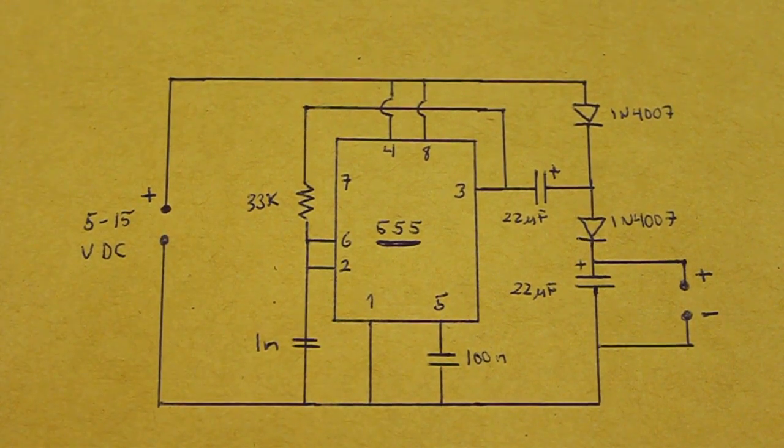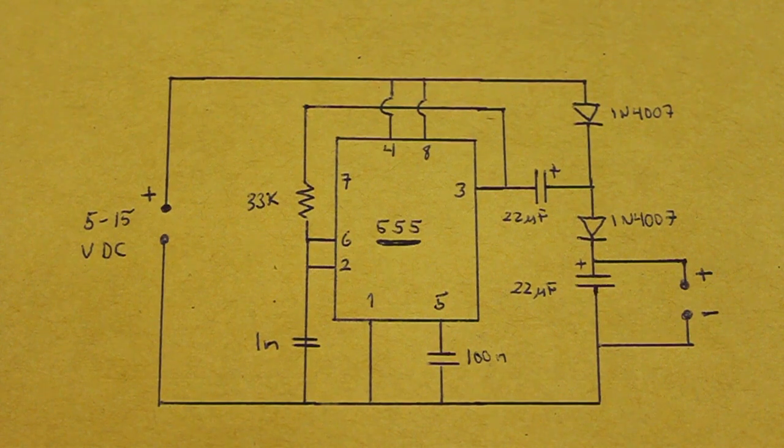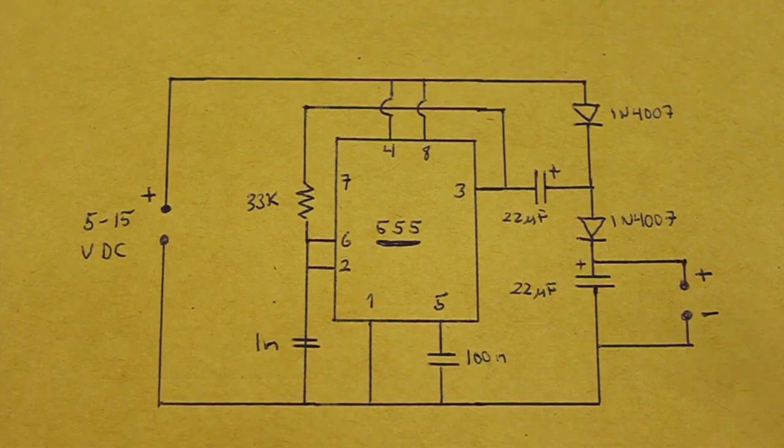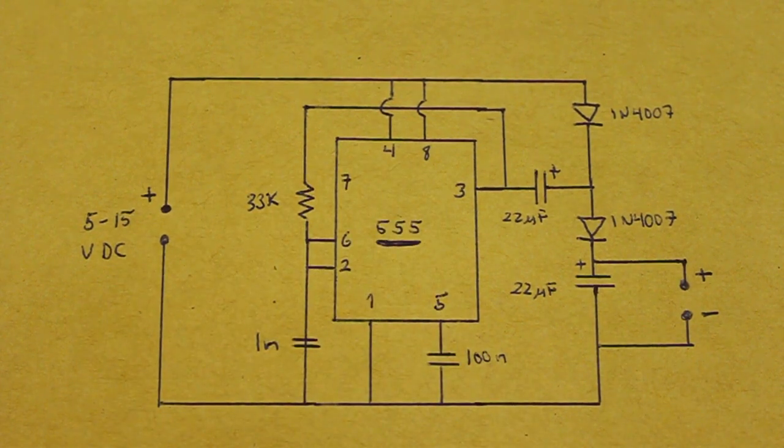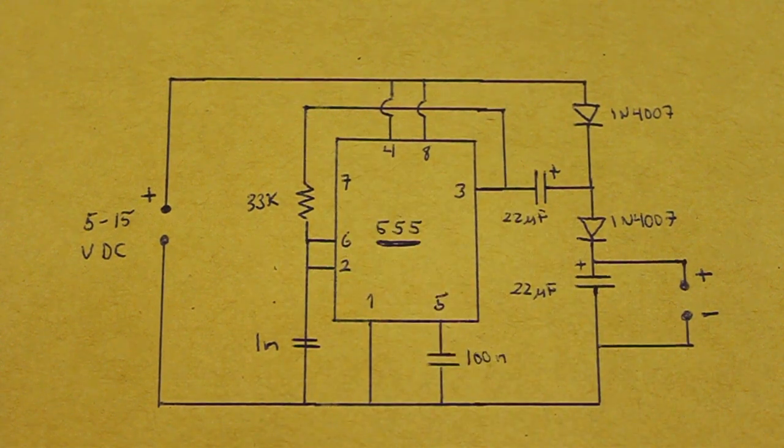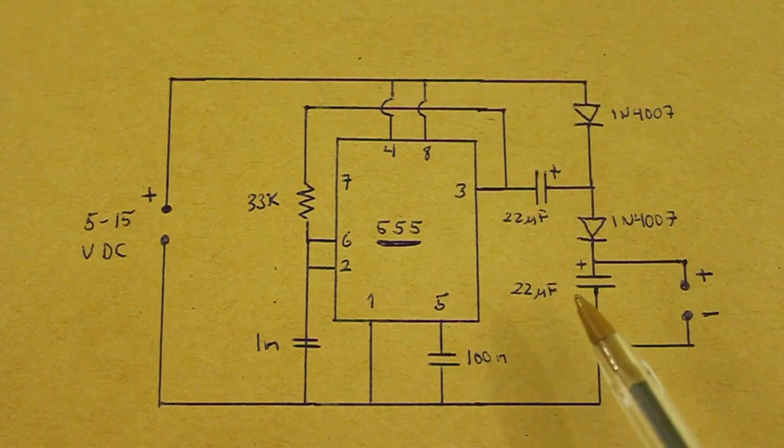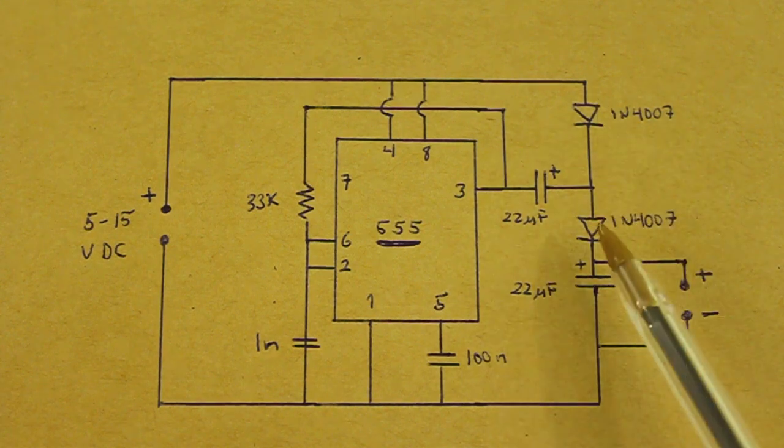The circuit is very simple, uses a few components. It consists of a 555 timer in astable mode, that is, it produces a train of pulses. And in another video that I give you also in the description, I discuss the working of this timer in astable mode. And here we have the section of the multiplier, the Villard cascade, the two capacitors and two diodes.